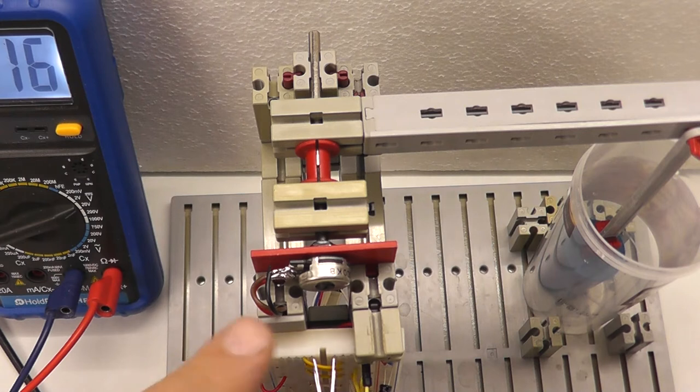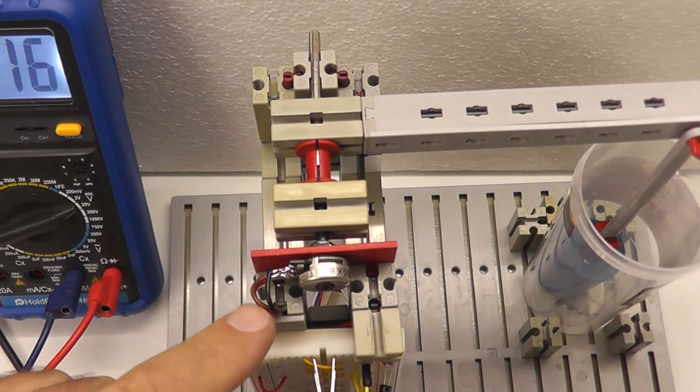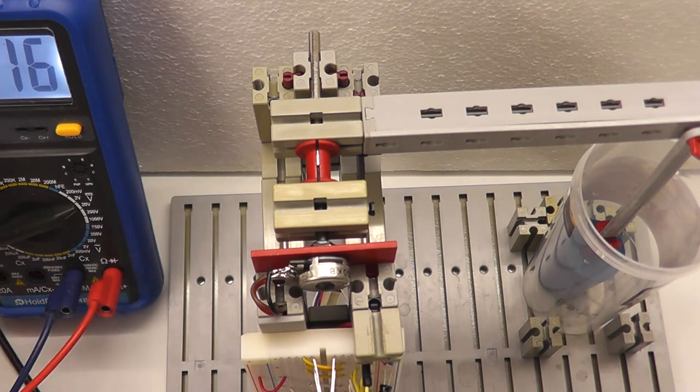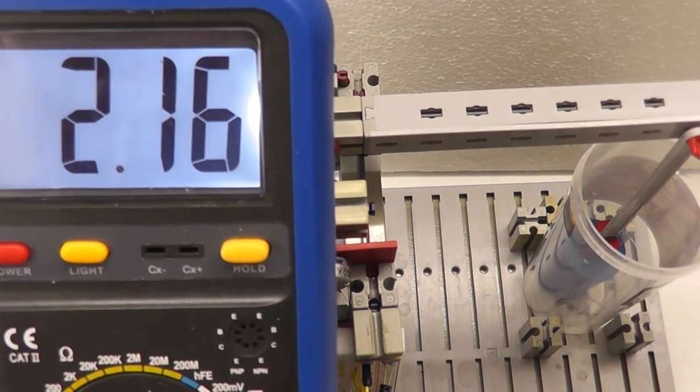After that I connected the potentiometer like a voltage divider and measured the output voltage. You can see the output voltage first if the arm is down here with the multimeter. This is the voltage if the arm is down.